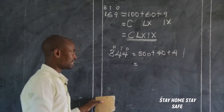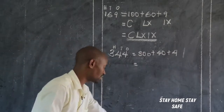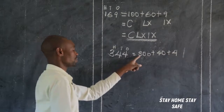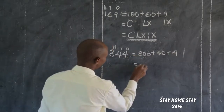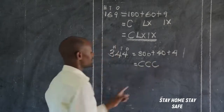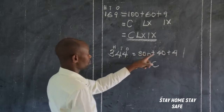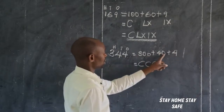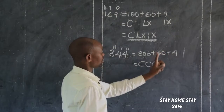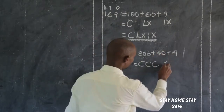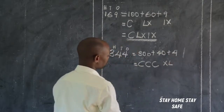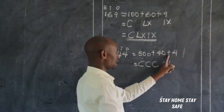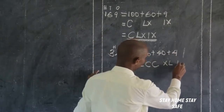How do we write three hundred? Any number beginning with three or two, you repeat. Three is in hundreds, so we repeat a hundred three times: C, C, C. What about forty? Those which begin with four and nine, you subtract. We get fifty, take away ten. So we have X subtracted from L. What about four? It is five minus one: I then V.